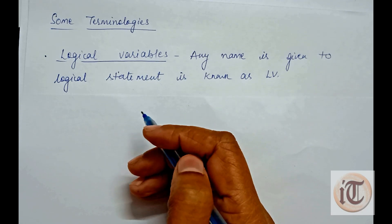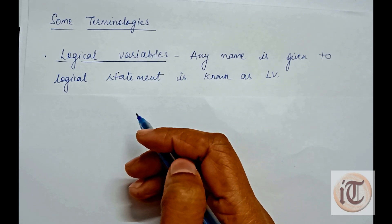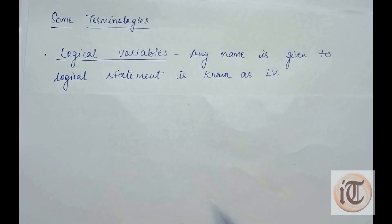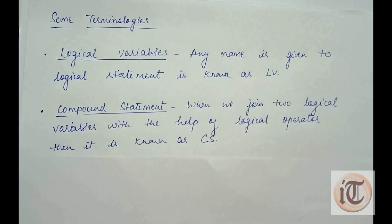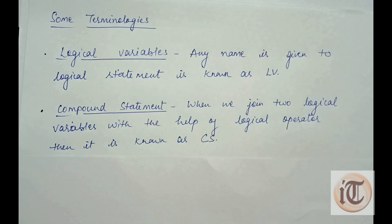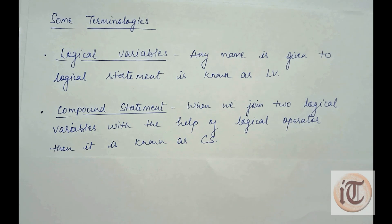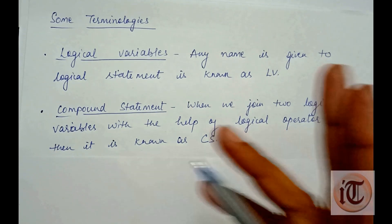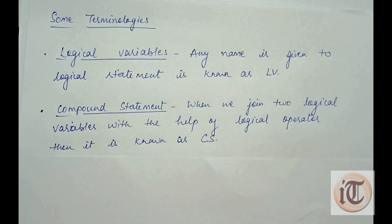Logical variables can be named A, B, C, D or X, Y, Z, W, P — anything. Next is the compound statement. When we join two logical variables with the help of a logical operator, that statement is called a compound statement.